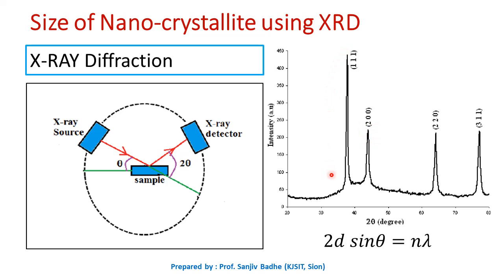In this graph, the highest peak is identified. With the help of this peak, we can find out the Bragg angle theta and beta, the full width at half maximum, which is required in Debye-Scherrer's formula to calculate the size of nanocrystallite. Now how to find theta and beta, let us try to understand.